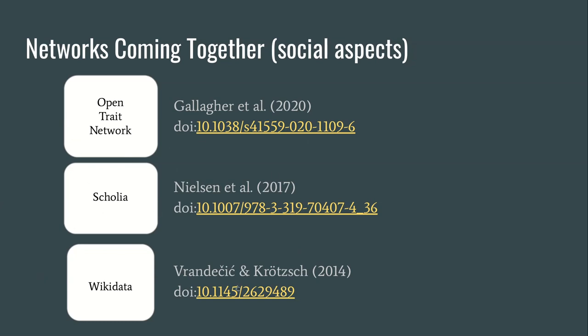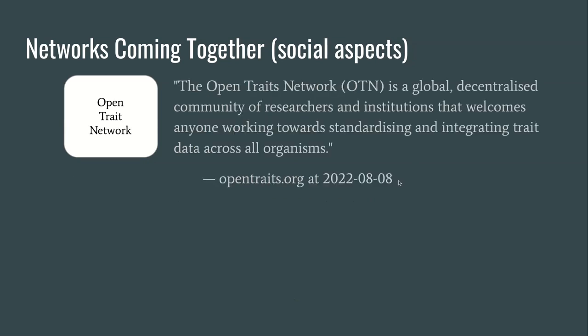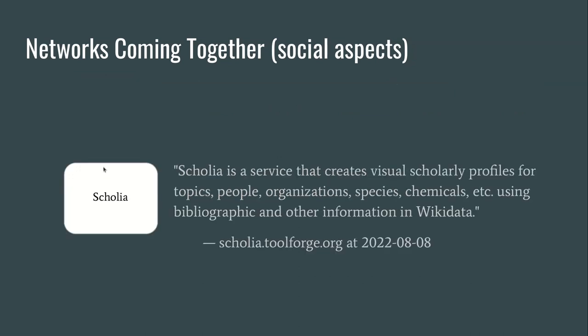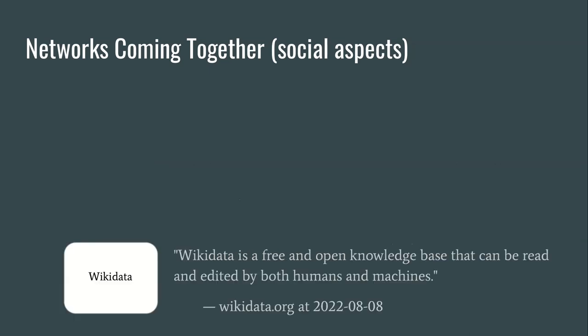For each of these we've listed a foundational article you can explore on your own. The Open Trades Network is a global, decentralized community of researchers and institutions that welcomes anyone working towards standardizing and integrating trait data across all organisms. Scholia is a service that creates visual scholarly profiles for topics, people, organizations, species, chemicals, etc., using bibliographic and other information in Wikidata. And Wikidata is a free and open knowledge base that can be read and edited by both humans and machines.